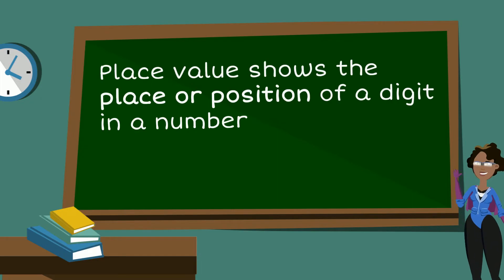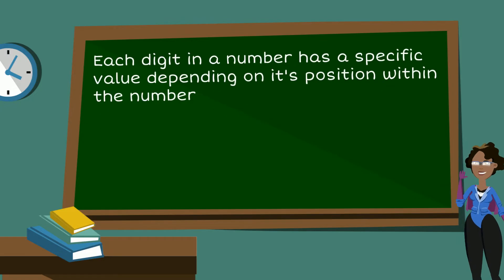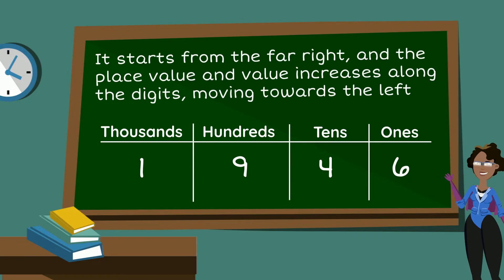Place value shows the place or position of a digit in a number. Each digit in a number has a specific value depending on its position within the number. It starts from the far right, and the place value increases along the digits moving toward the left.